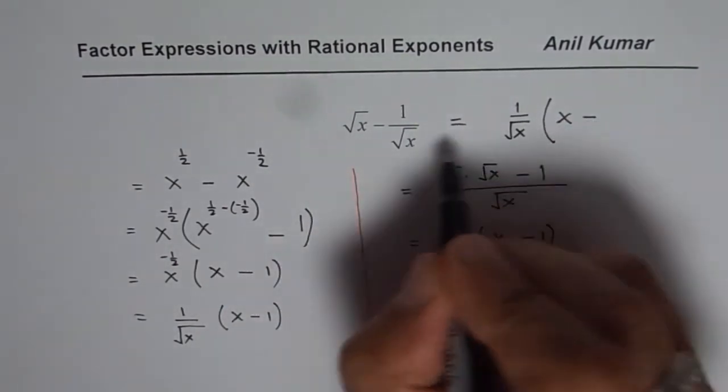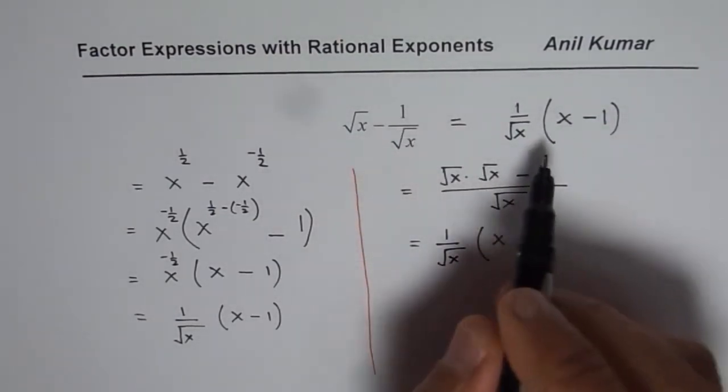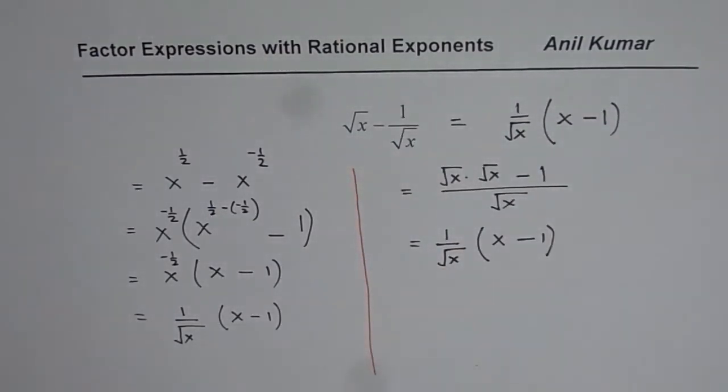So you get x minus 1 because you have already factored this term out. So that is the answer which you get either way. You could also do it directly now since you know why it is so.